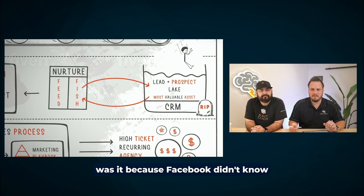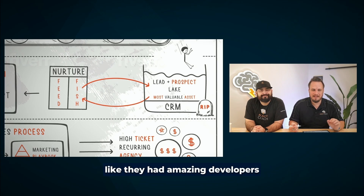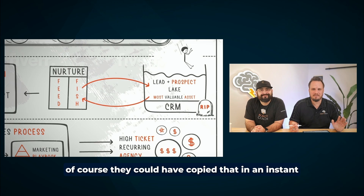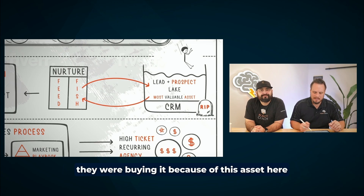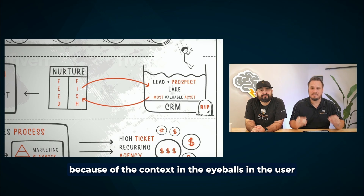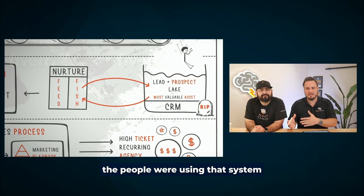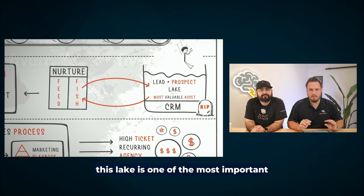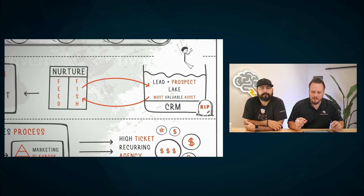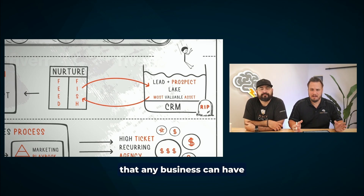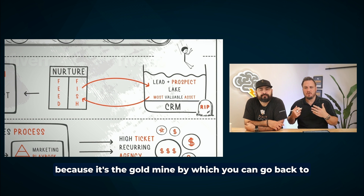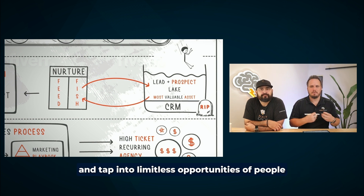When Facebook bought Instagram for a billion dollars, it wasn't because Facebook couldn't program Instagram — they had amazing developers and could have copied it in an instant. They were buying it because of this asset: the context, the eyeballs, the people using that system. This lake is one of the most important and valuable assets your business can have, because it's the gold mine you can go back to and tap into limitless opportunities with people who are interested in your services.